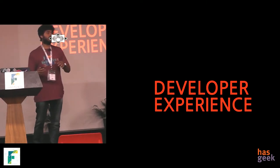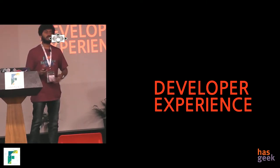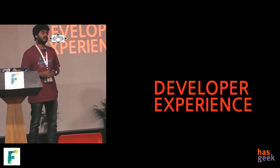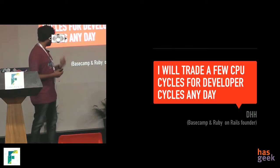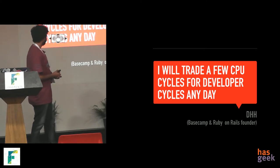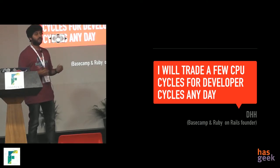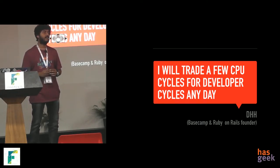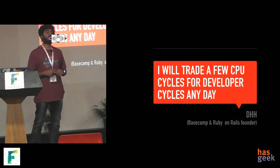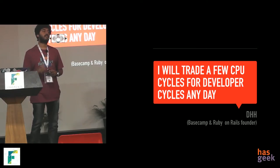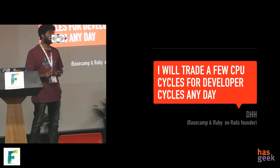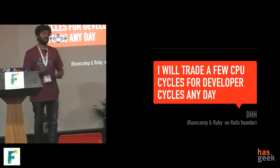The first thing to discuss is developer experience. I really like this quote by DHH, founder of Ruby on Rails: 'I will trade a few CPU cycles for developer cycles any day.' A lot of times when you have a fast-moving product, people being able to build things quickly is more important than 5–10 percent of performance. That is very important to ship products.